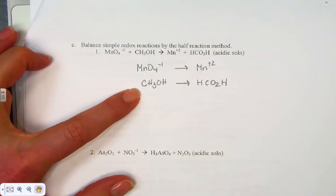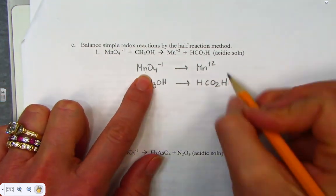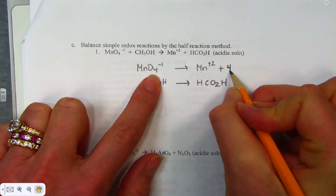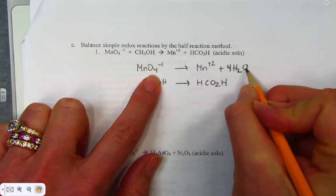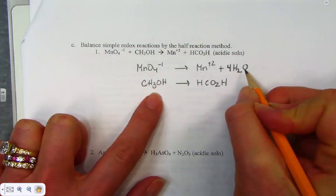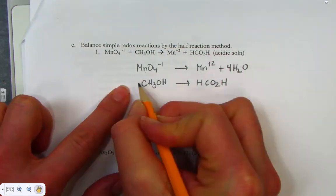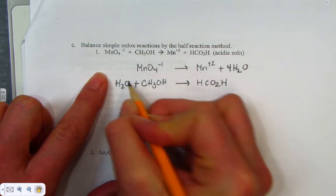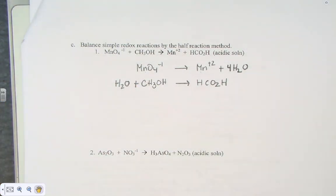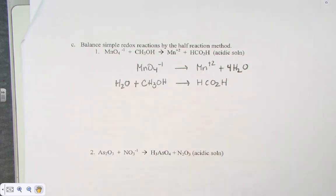Now we balance the oxygens by adding water. In the first half-reaction I'll add 4 waters to get 4 oxygens. In the second half-reaction there are 2 oxygens on the right but only 1 on the left, so I'll add 1 more water to give a total of 2 oxygens on each side.